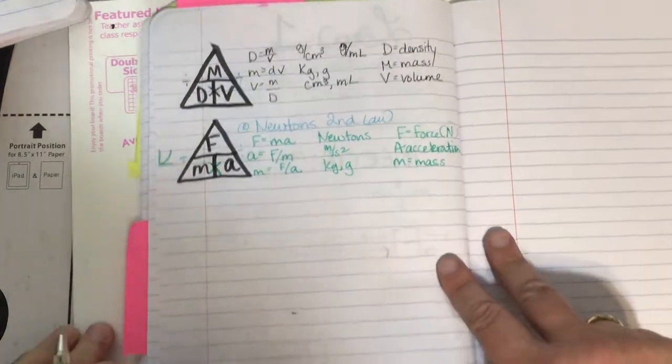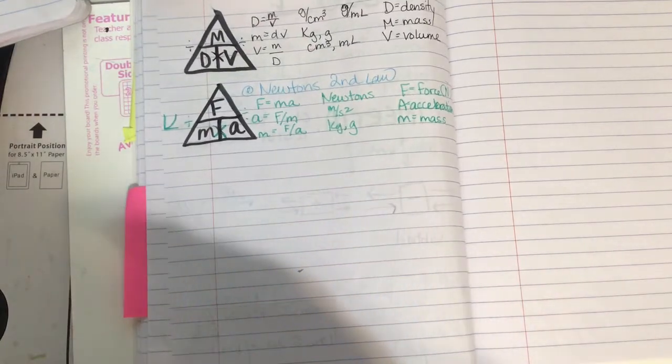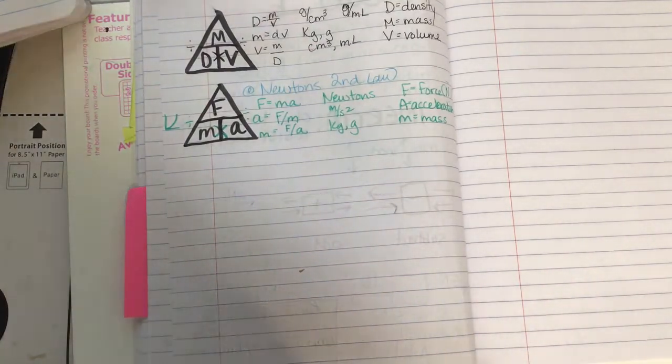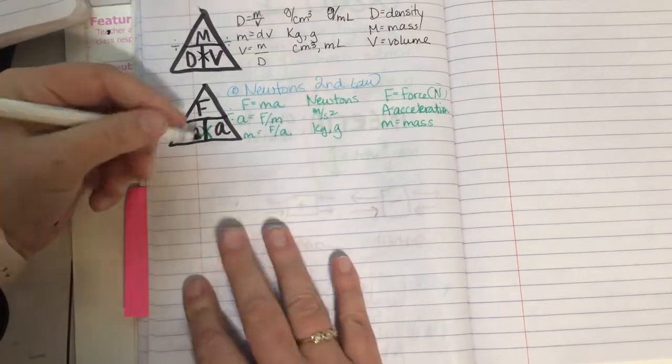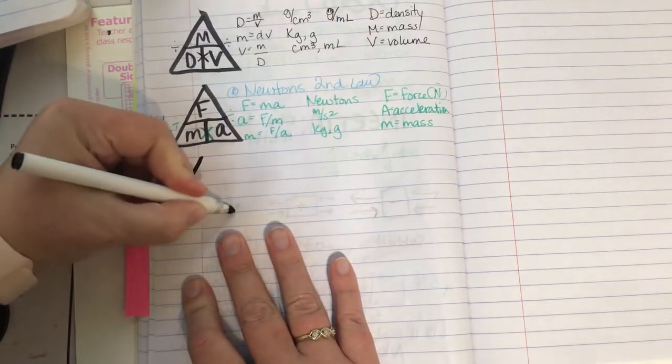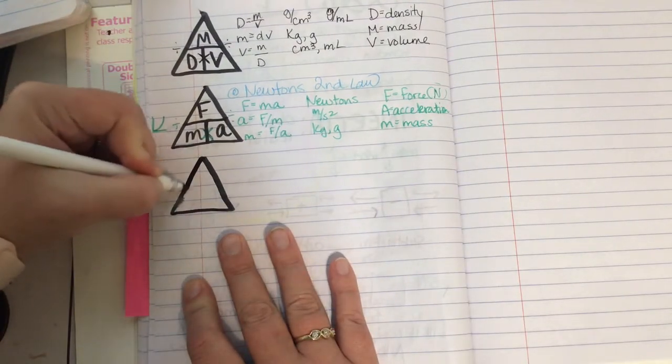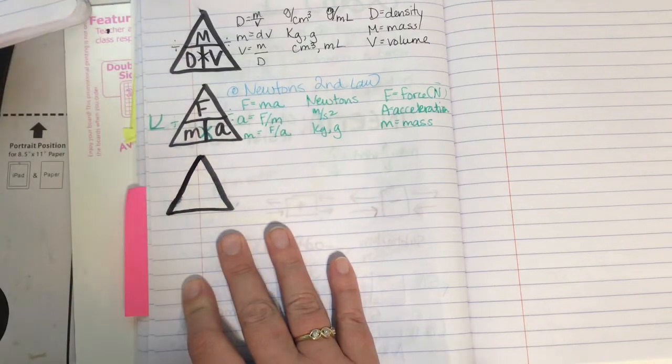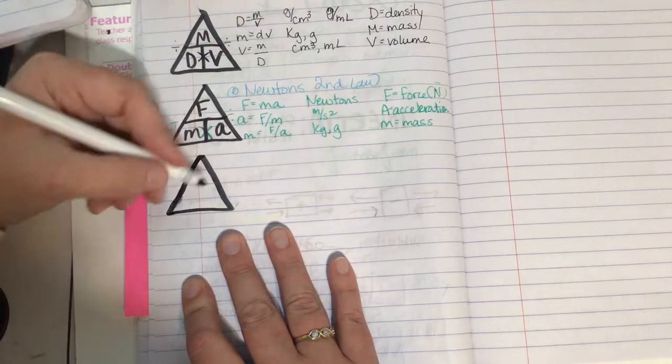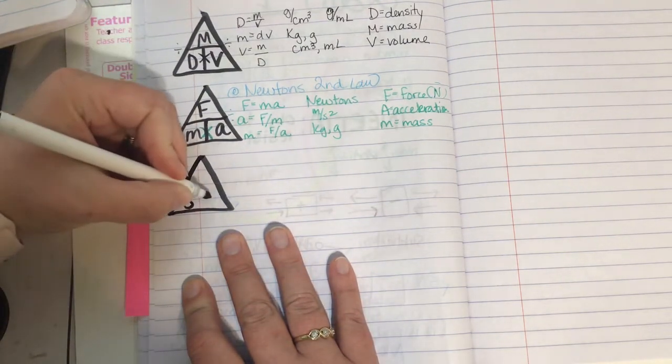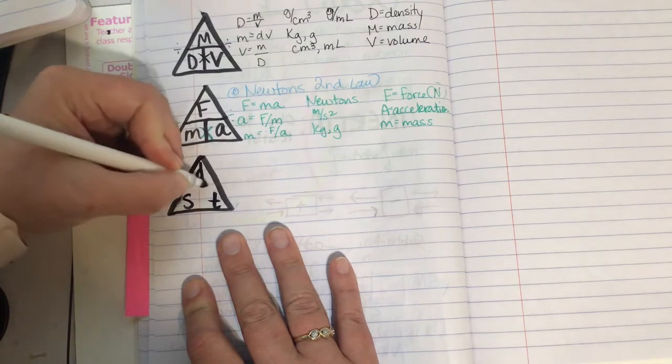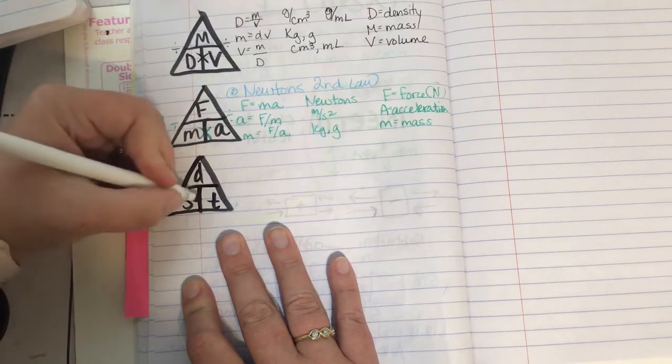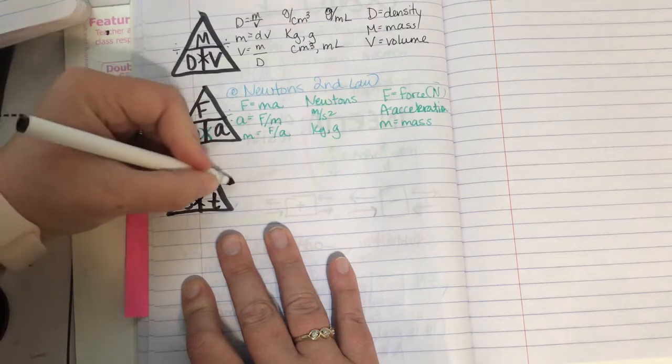You have another triangle we've learned this year. And it is your speed triangle. So I'm going to refresh you with that one. I'm going to draw my triangle. I can remember this, remember with S, T, and the D is on top. Side by side, I multiply. Above and below, I divide.